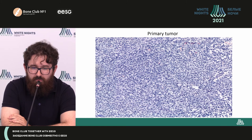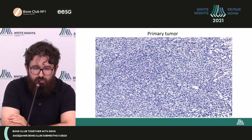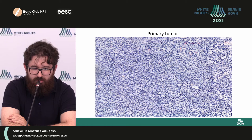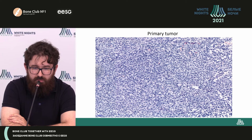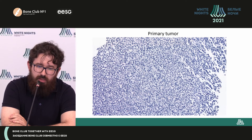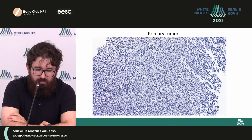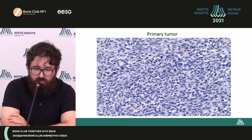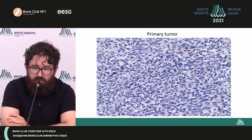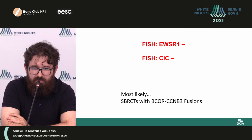By that time, we already received the samples of the primary tumor. When we saw the primary tumor material, the puzzle started to arrange. Here you can see something similar to a small blue cell tumor — quite many roundish and oval nuclei, myxoid stroma — and if you look closer, the nuclei show weak to moderate polymorphism with mitosis.